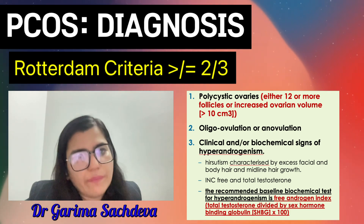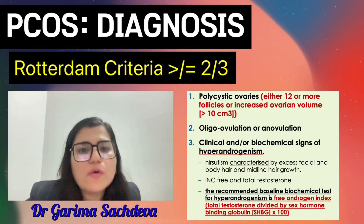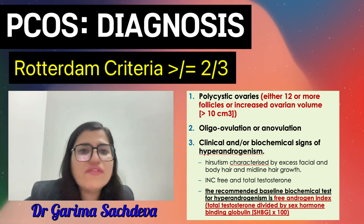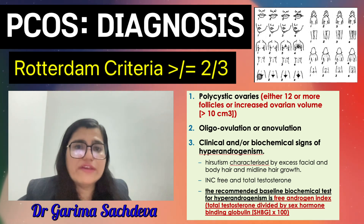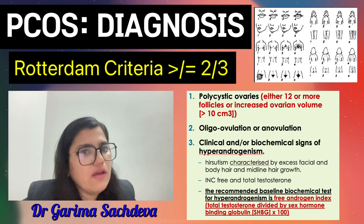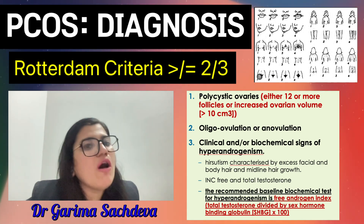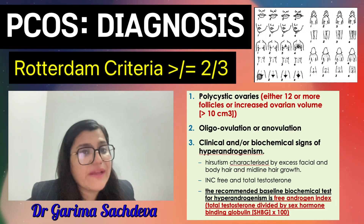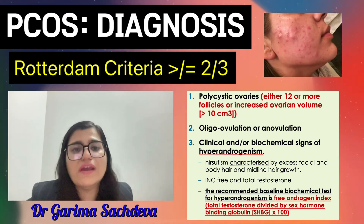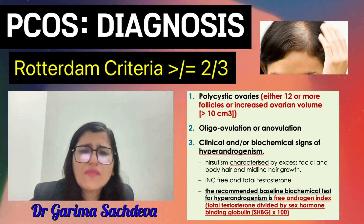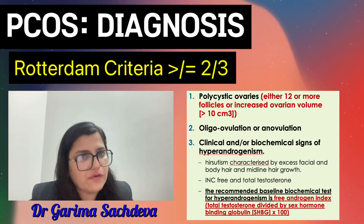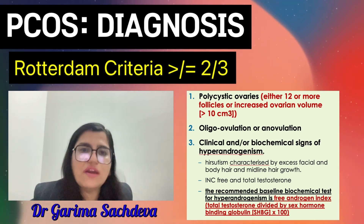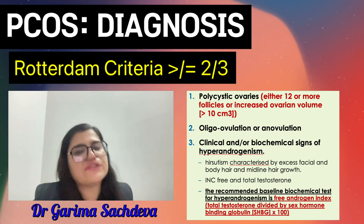The second criteria is hyperandrogenism, which could be clinical or biochemical. To diagnose clinical hyperandrogenism, we use the Ferriman-Gallwey scale, in which we score body hair in nine parts of the body from zero to four. If the score is more than or equal to four to six, we call the patient to have clinical hirsutism. Other features include acne or androgenic hair loss. Biochemical hyperandrogenism is detected by checking testosterone levels, total or free sex hormone-binding globulin, androstenedione, or free androgen index, which is the most sensitive parameter.